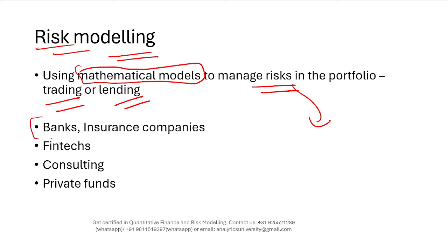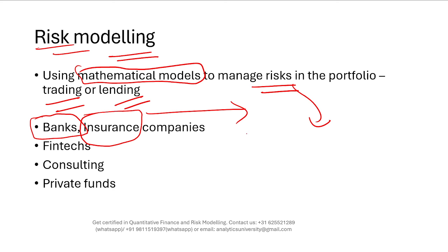Things changed dramatically after new regulations came to light. For example, the Basel rules for banks have become so strict that banks have no choice but to invest in modeling and data. Similarly, insurance companies are also heavily investing in data and modeling. Most quants who work in banks and insurance companies work in the risk management area. If you want to work as a quant in these companies, most likely you'll be working in risk modeling.